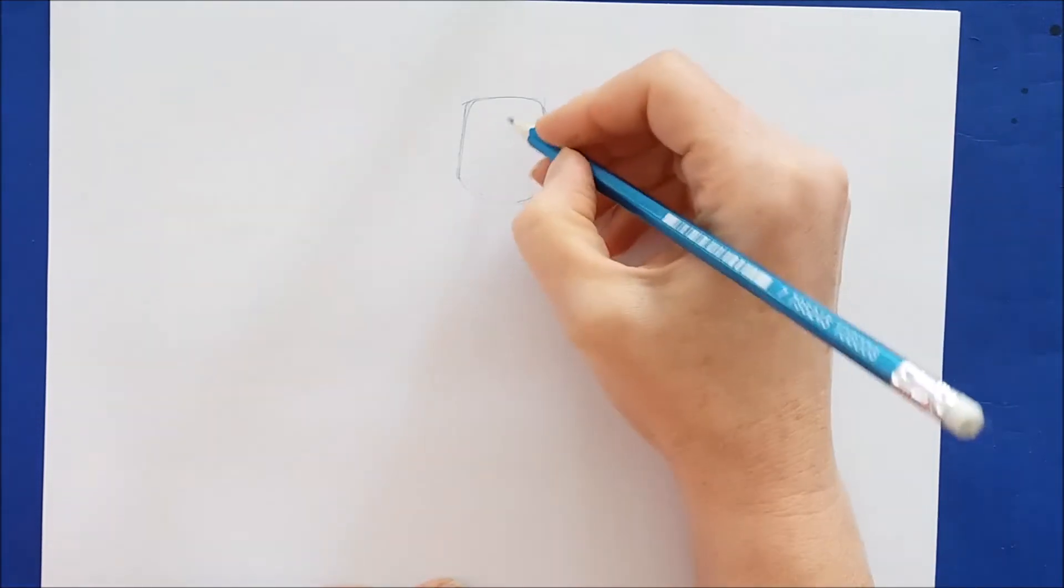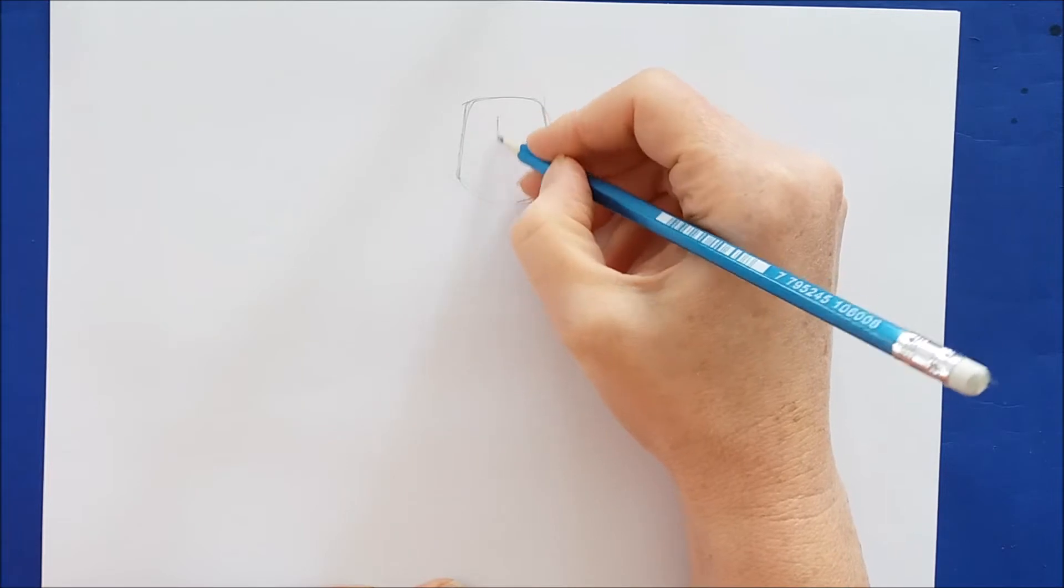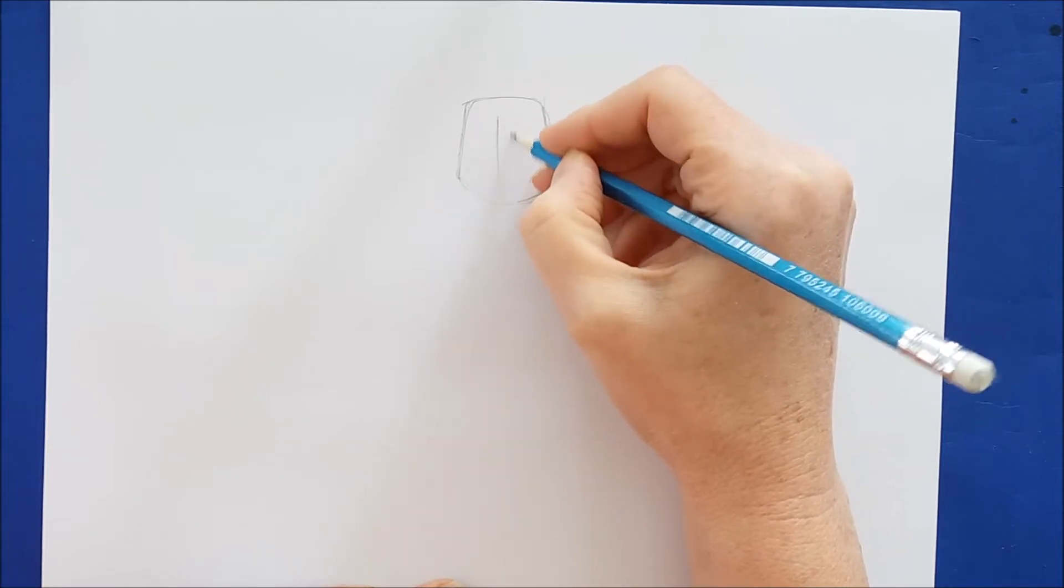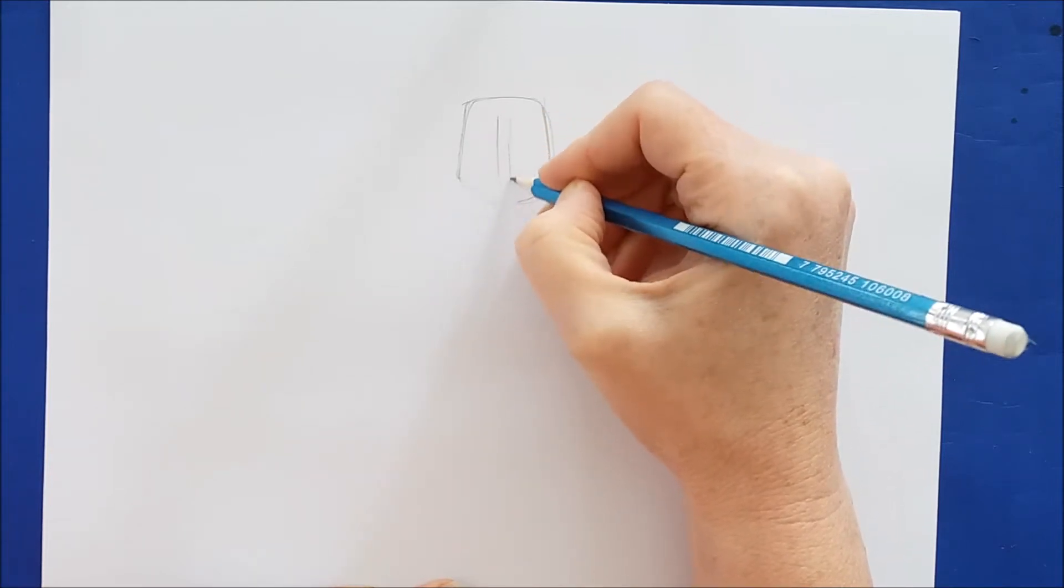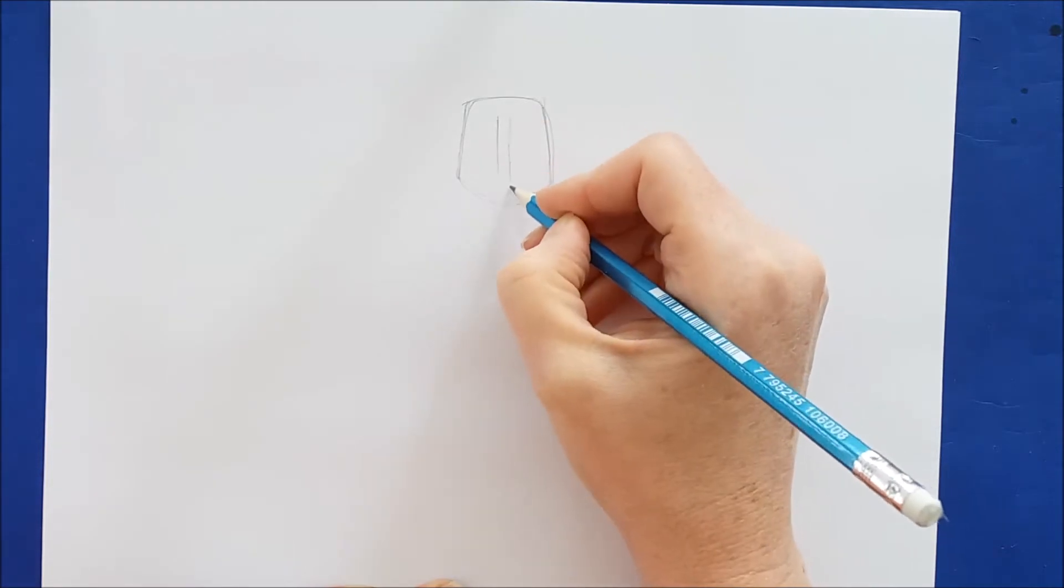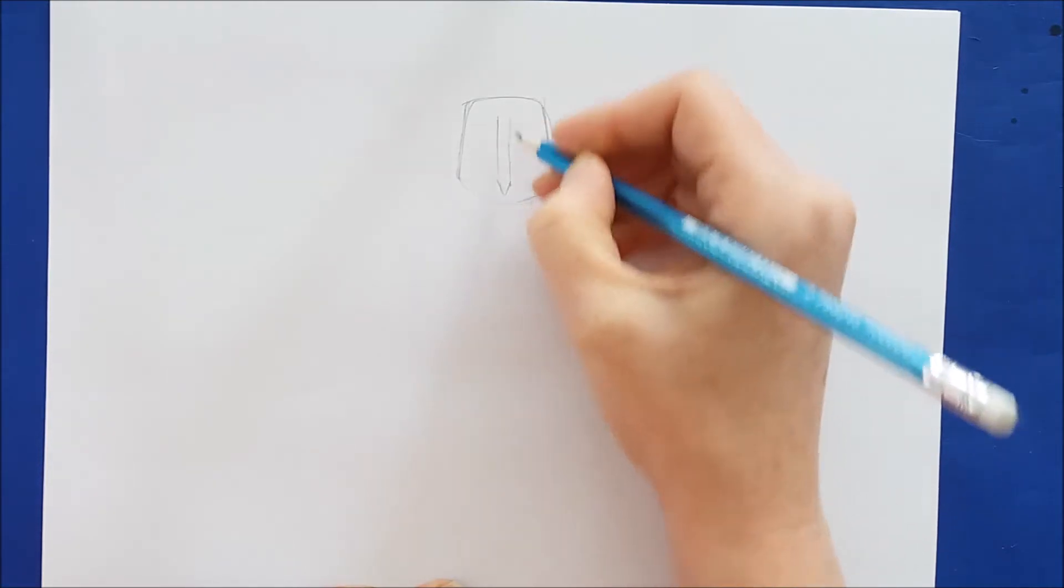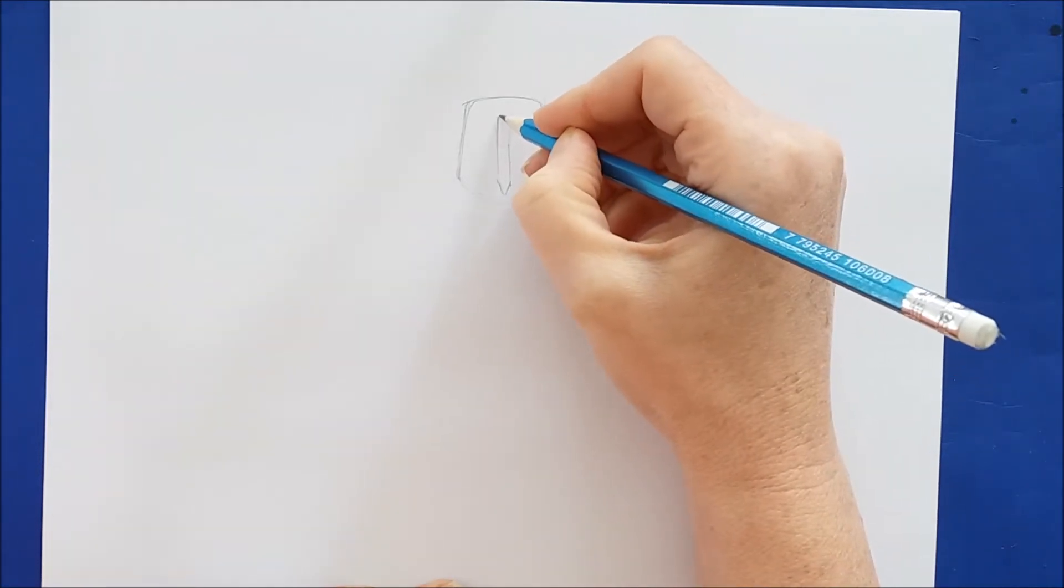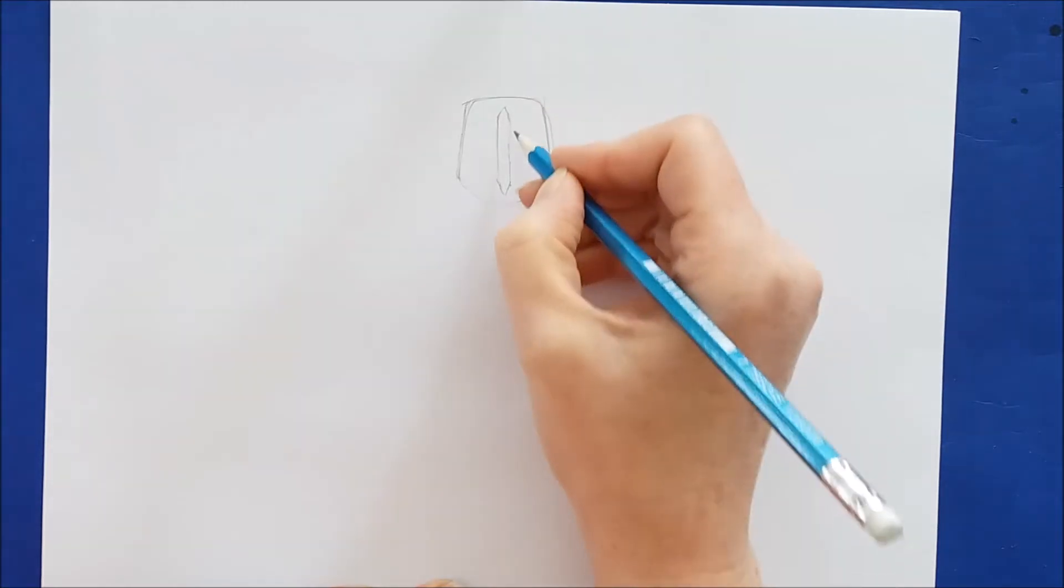This gives us the shape of an upside down bucket. Once we have that shape completed, I need to add the face mask and I'm going to do that by drawing across here.